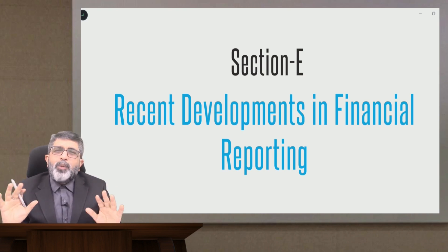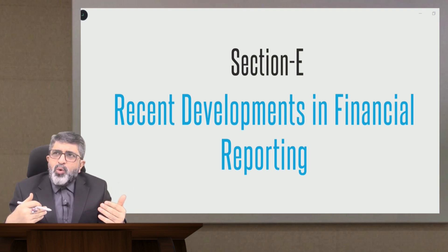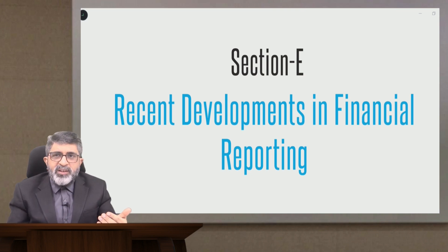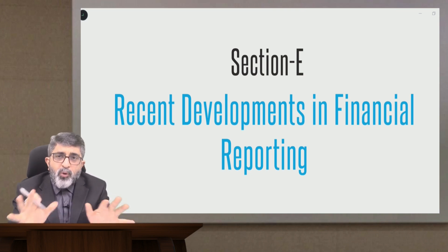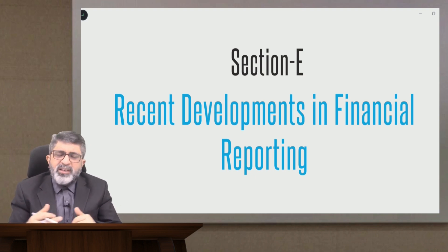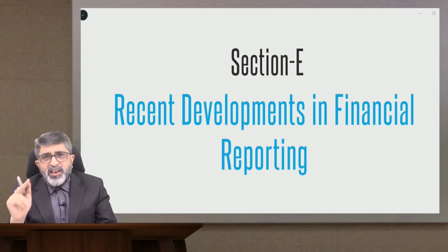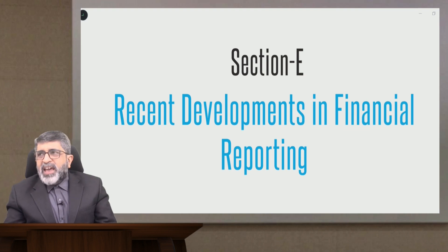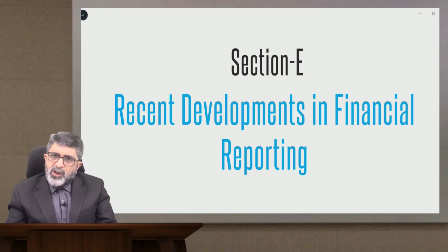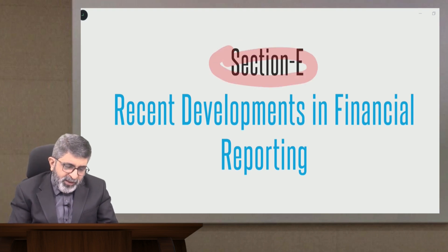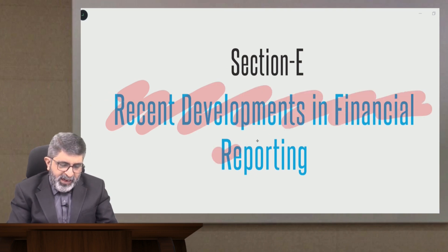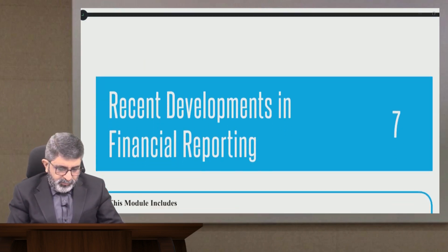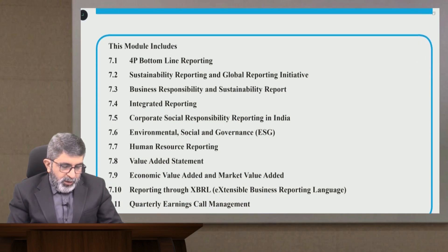Most of the topics in this list are topics of general awareness where I don't find a need to provide any content from my side. But what students have been requesting is that if I can give an overview about what exactly this is all about, they will be able to understand it better. The last two sections of your syllabus — Section E and Section F — are both very simple. Section F is basically government accounting in India, which I have covered separately, and Section E comprises 11 topics under recent developments in financial reporting.